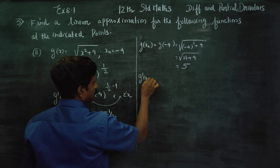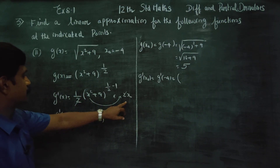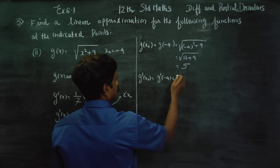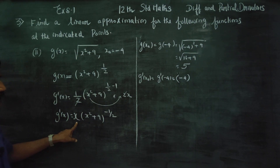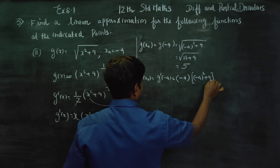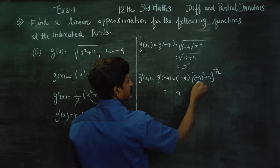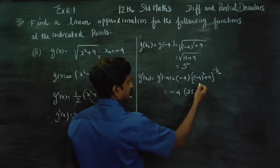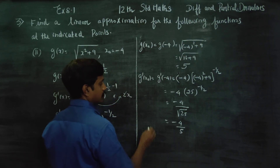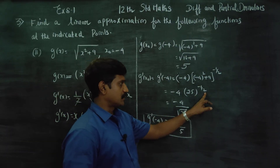Now find g'(x₀) = g'(-4). Substituting x = -4 into g'(x) = x(x² + 9)^(-1/2): we get (-4)((-4)² + 9)^(-1/2) = (-4)(16 + 9)^(-1/2) = (-4)(25)^(-1/2) = -4 × (1/5) = -4/5. So g'(x₀) = -4/5.